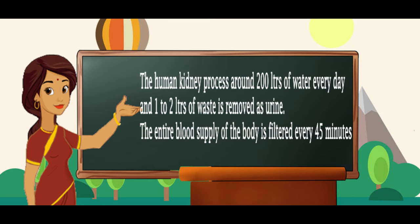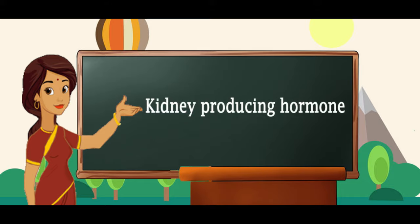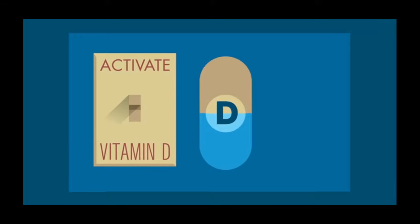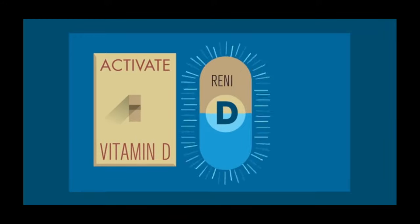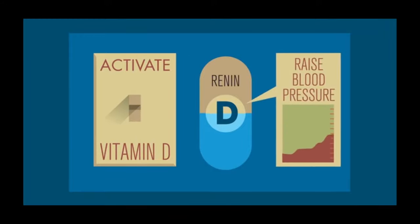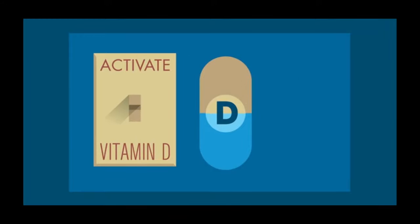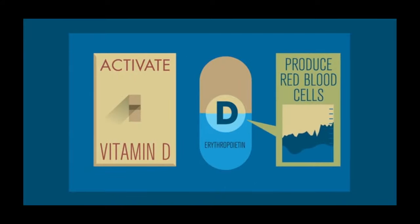The entire blood supply of the body is filtered every 45 minutes. Along with this, the kidney produces a hormone called renin by activating vitamin D that raises the blood pressure, and a hormone called erythropoietin to increase the production of red blood cells.